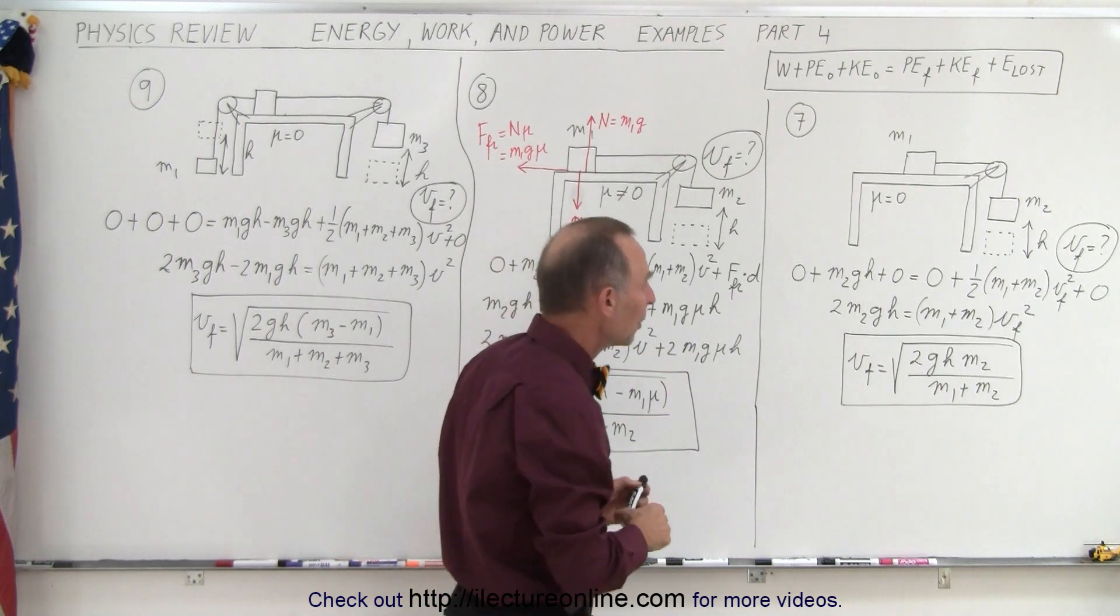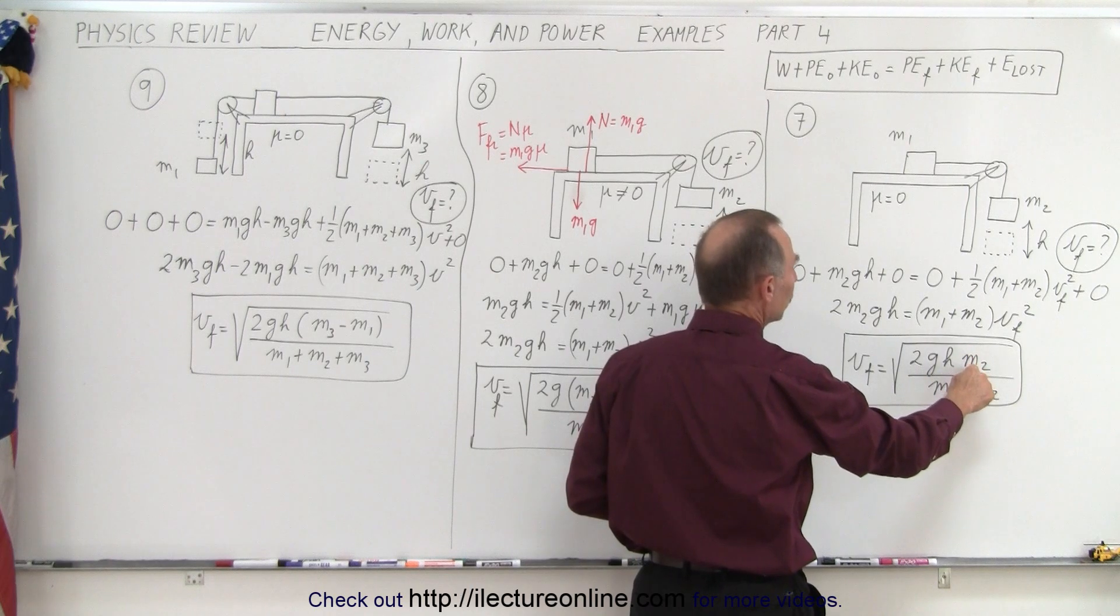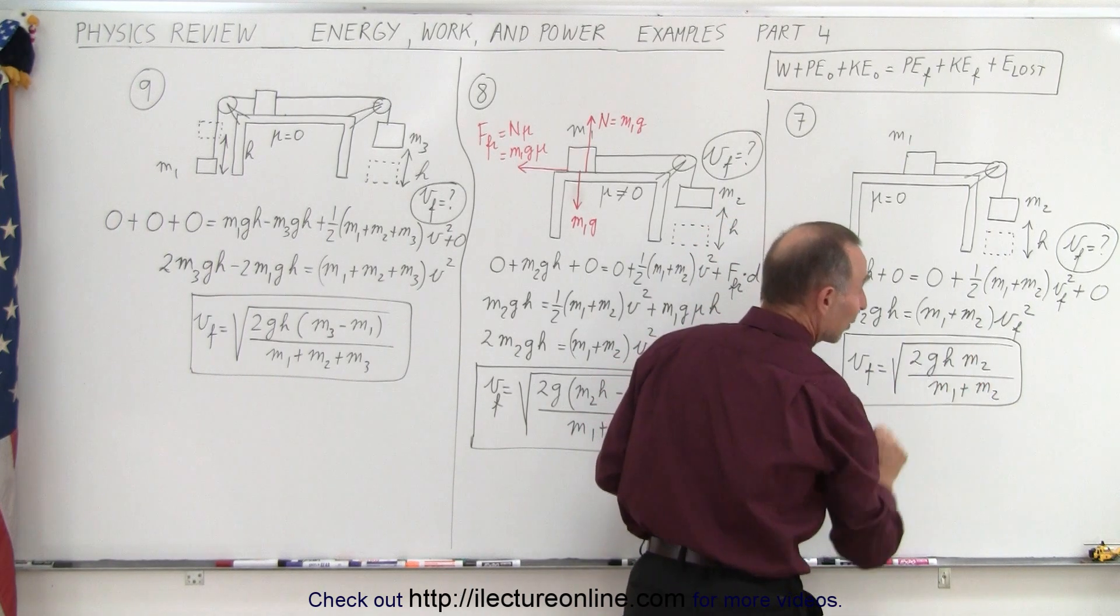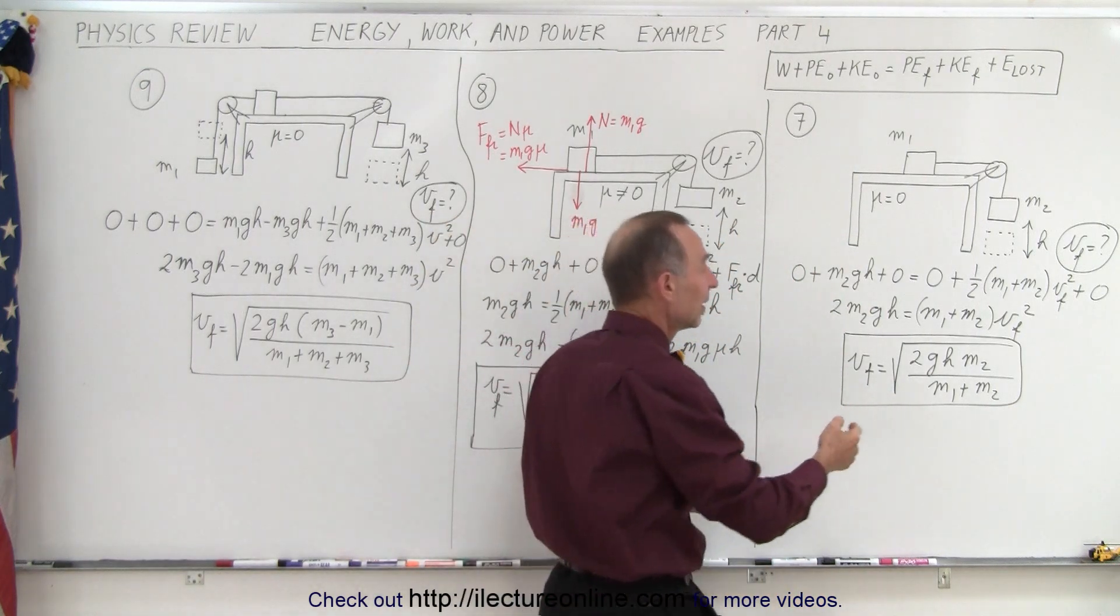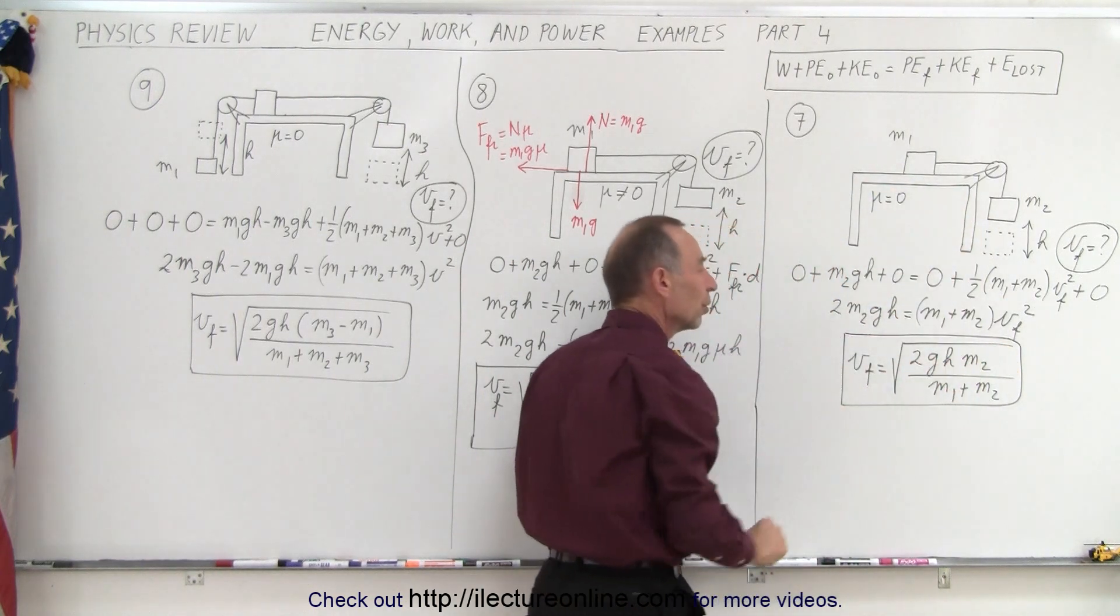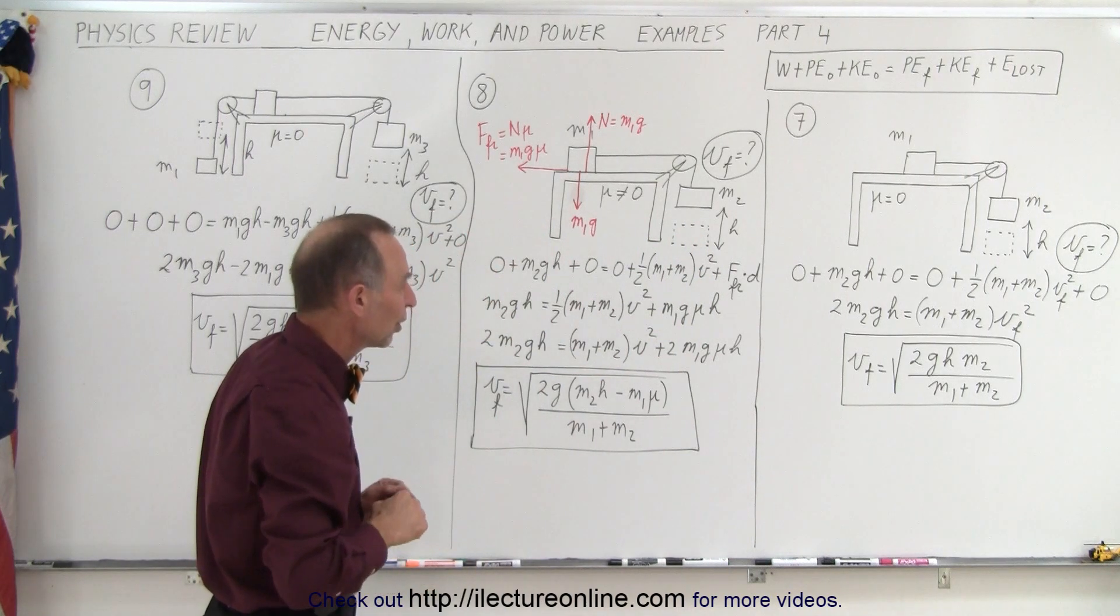We solve that algebraically and we get v final equals the square root of 2gh times the fraction m2 divided by m1 plus m2. Notice there's the square root of 2gh again, but it's diminished by the fact that only m2 is causing the change in height—m2 is causing both of them to move. So it's not going to move quite as fast as the square root of 2gh.